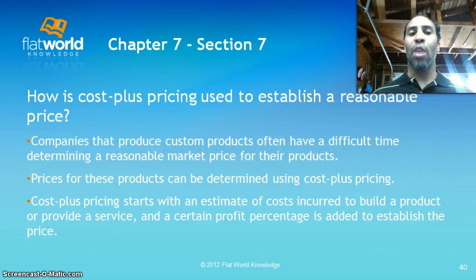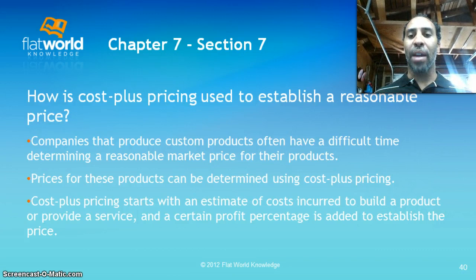How is cost plus pricing used to establish a reasonable price? Just think about what the word says: cost — how much it costs you to make your product — plus pricing — how much money you need in terms of profit so that you can pay yourself, pay your employees, and things of that nature. Companies that produce custom products often have a difficult time determining a reasonable market price, and prices for these products can be determined using cost plus pricing.